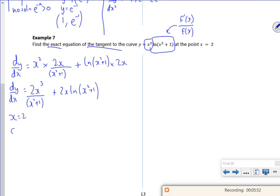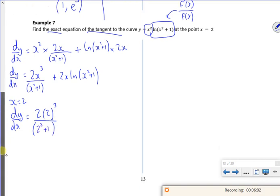So when x is 2, dy by dx is 2 lots of 2 cubed, that's 8, over 2 squared plus 1 is 5.